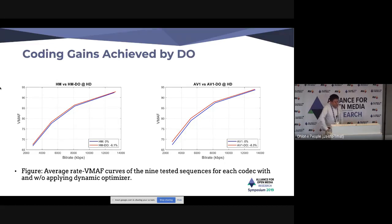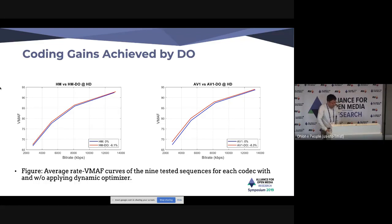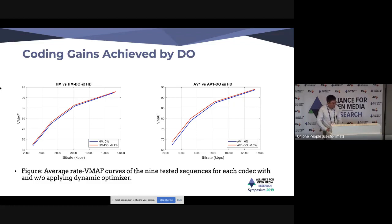We also investigated coding gains from applying convex hull optimization, which is part of the dynamic optimizer. We calculated average rate-VMAF curves for all nine test sequences for HM and AV1. The BD-rate saving for HM using the optimization is 6.1%, and for AV1 it is slightly higher at 8.3%.